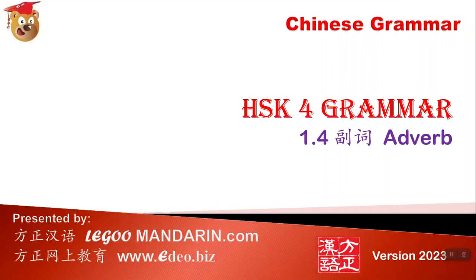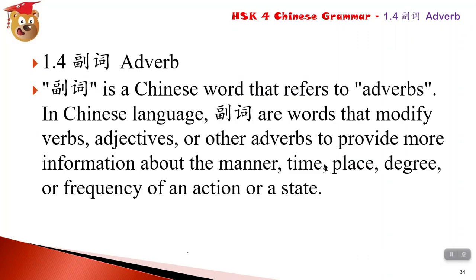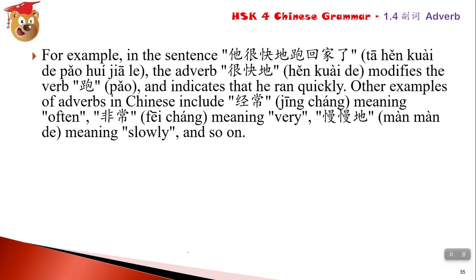As we continue Part 4 - 副词, adverb. 副词 is used to describe the verb or adjective, or even a verb to describe a verb. For example, 连常 and 非常 are both used to describe the verb.